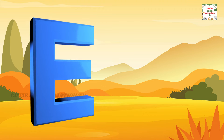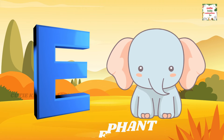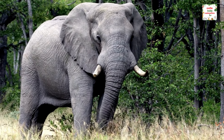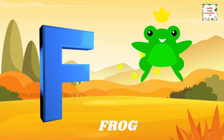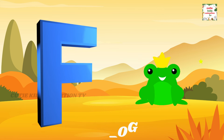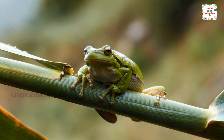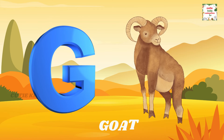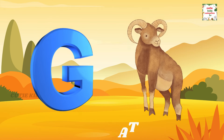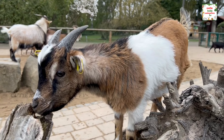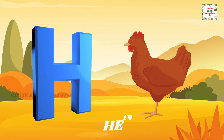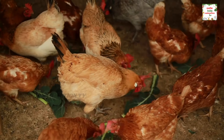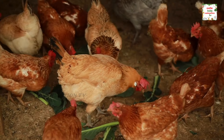E is for Elephant, E-E-Elephant. F is for Frog, F-F-Frog. G is for Goat, G-G-Goat. H is for Hand, H-H-Hand.